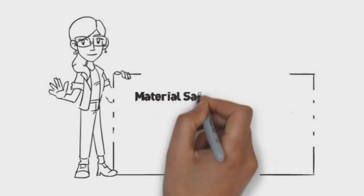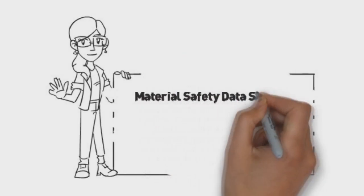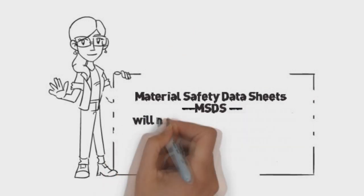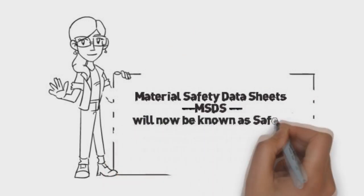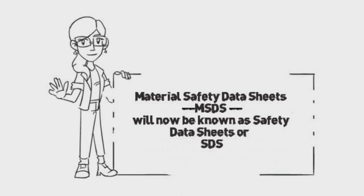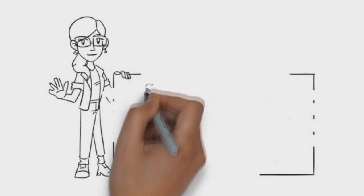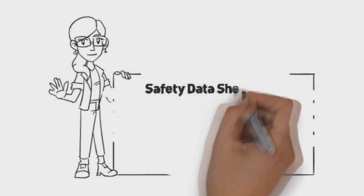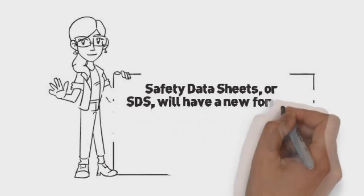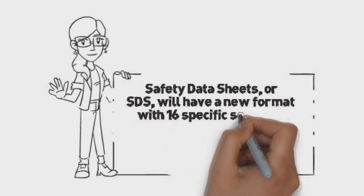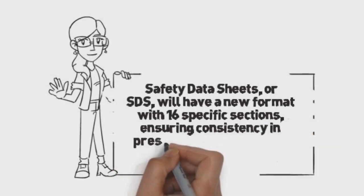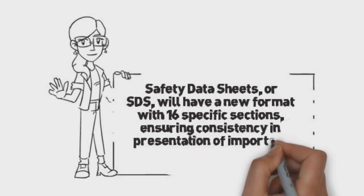What we now know as Material Safety Data Sheets are now going to be shortened in name and will be known simply as Safety Data Sheets, or SDS, instead of MSDS. The Safety Data Sheets, or SDS, will now have a new format that has 16 specific sections ensuring consistency and presentation of important protection information.